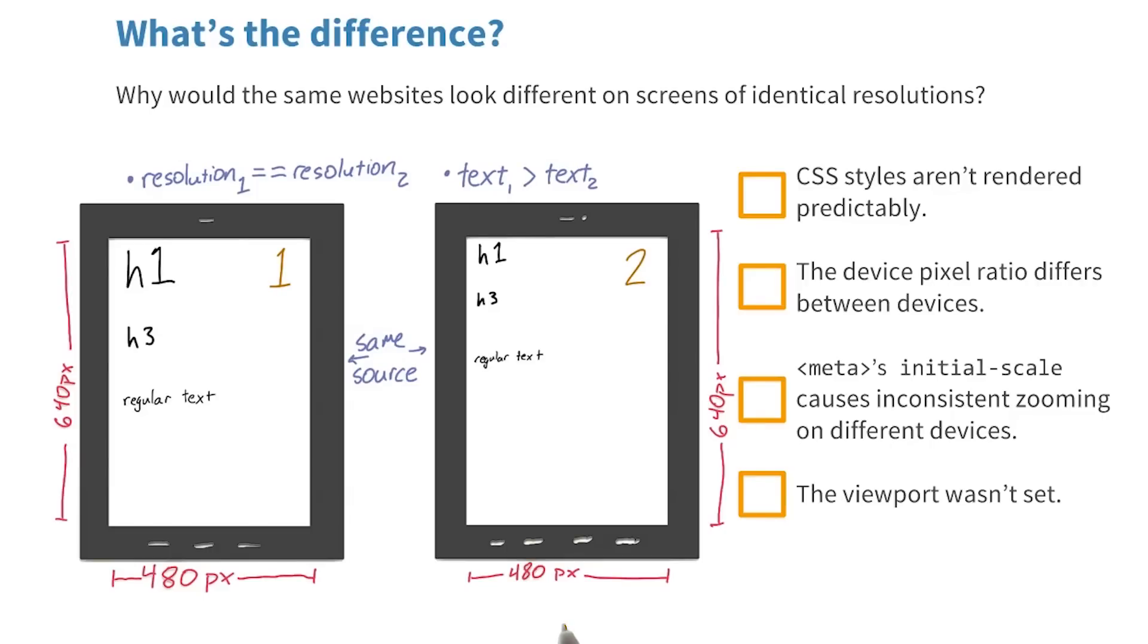Given two screens of identical resolution, like the two you see here, why would text look different on the different screens?